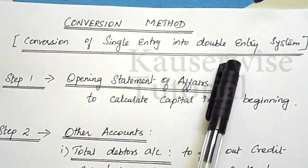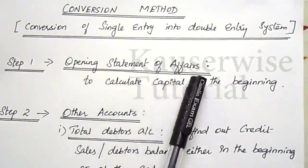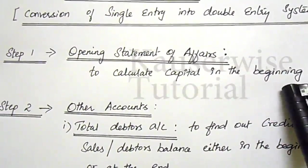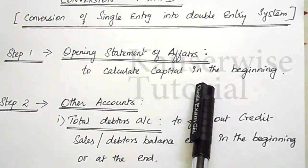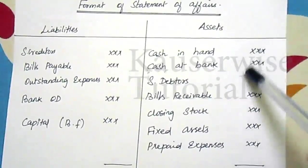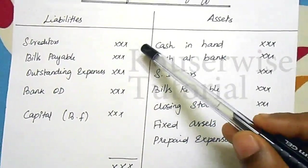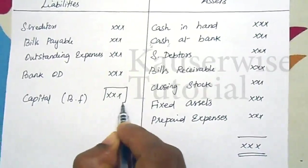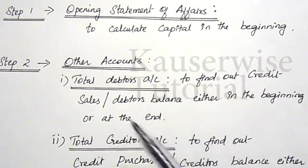In order to convert single entry into double entry, we need to follow four important steps. The first step is we need to prepare an opening statement of affairs in order to calculate capital at the beginning. This is very important information and can be identified with the help of preparing a statement of affairs. The statement of affairs is just like a balance sheet — take all the assets and liabilities given in the problem; the missing figure will be the opening capital.